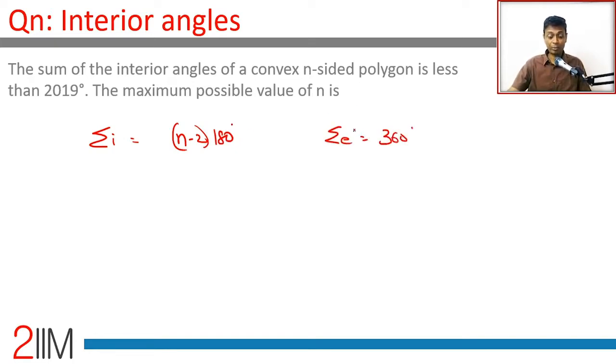Both of these add up to 180n. So (n-2) × 180 is not equal to 2019, it is less than 2019. Therefore, n-2 is less than 2019 divided by 180.